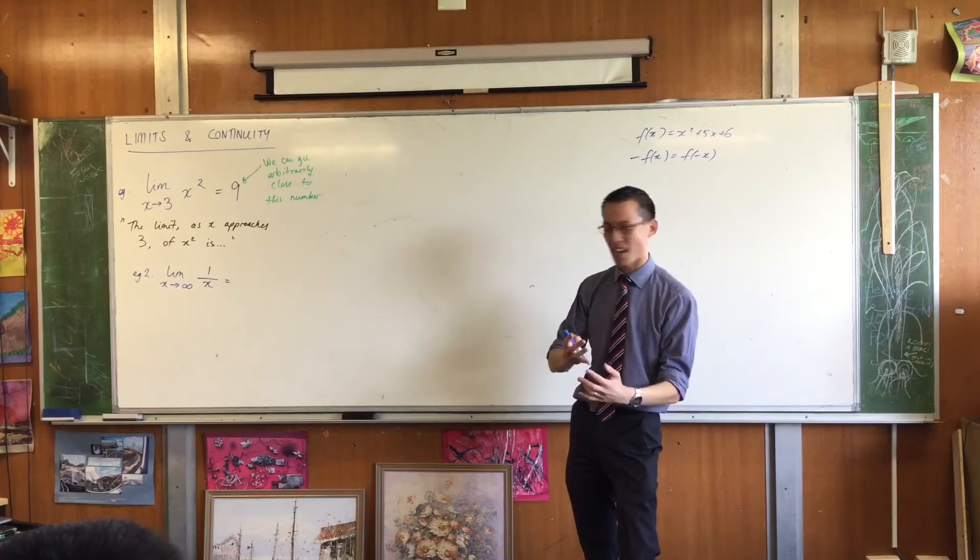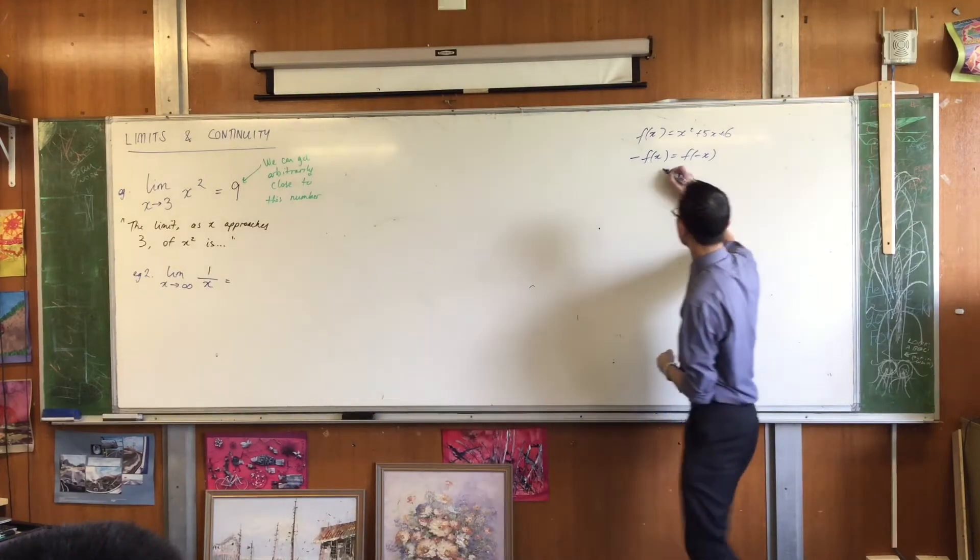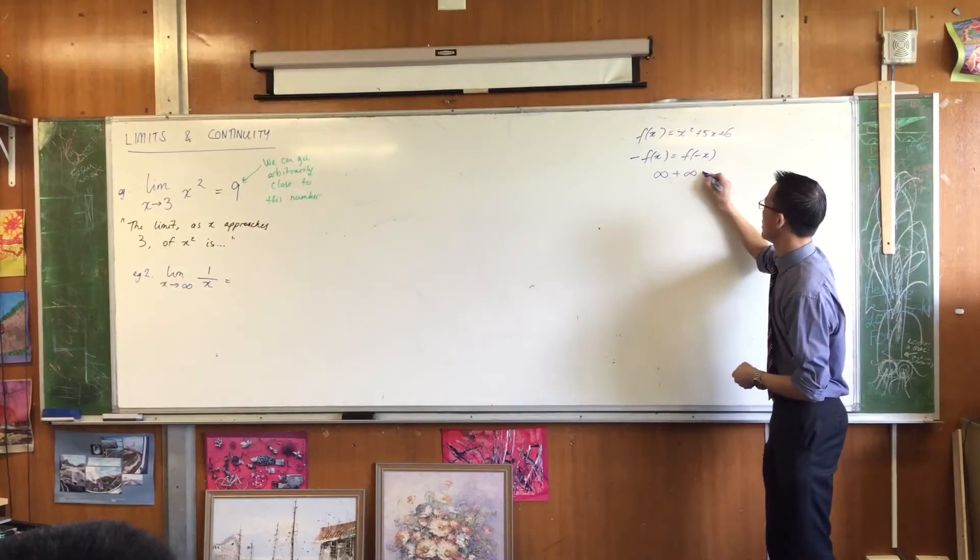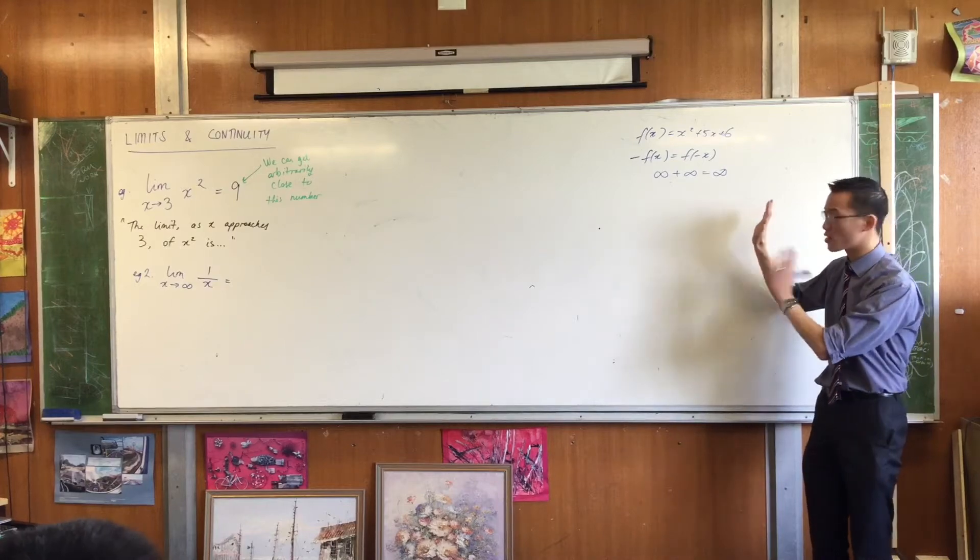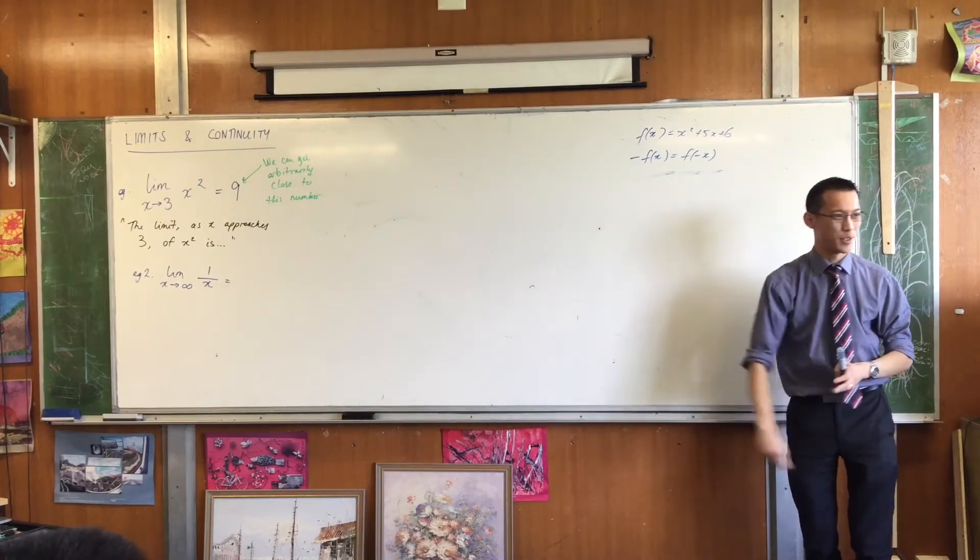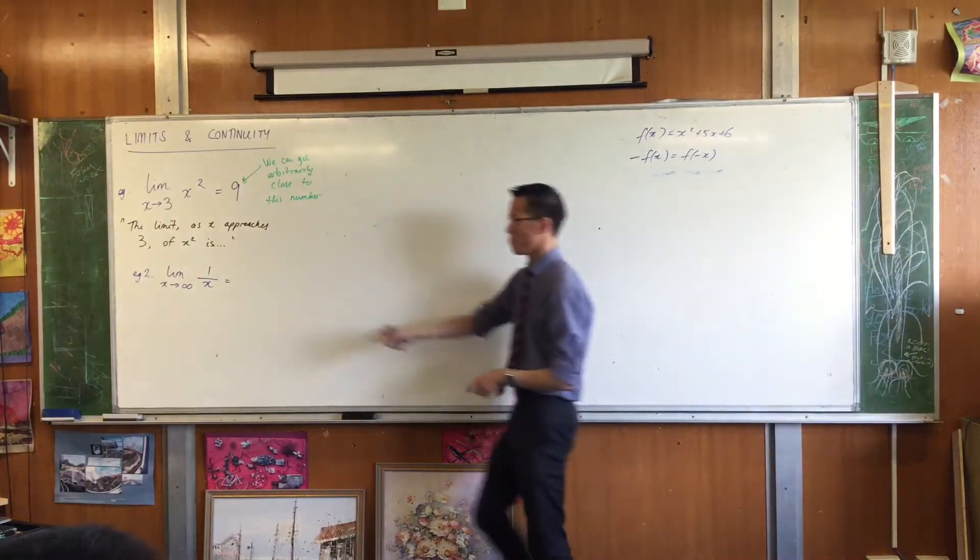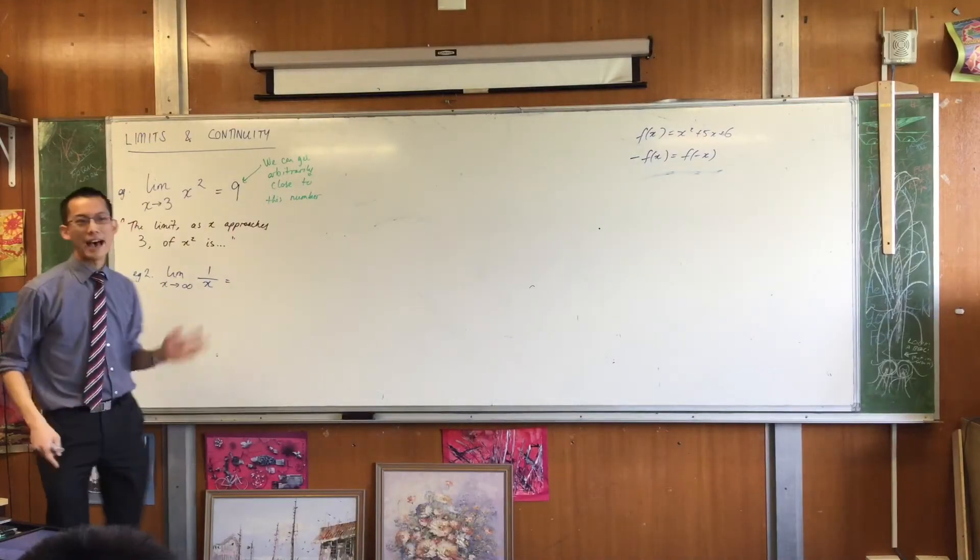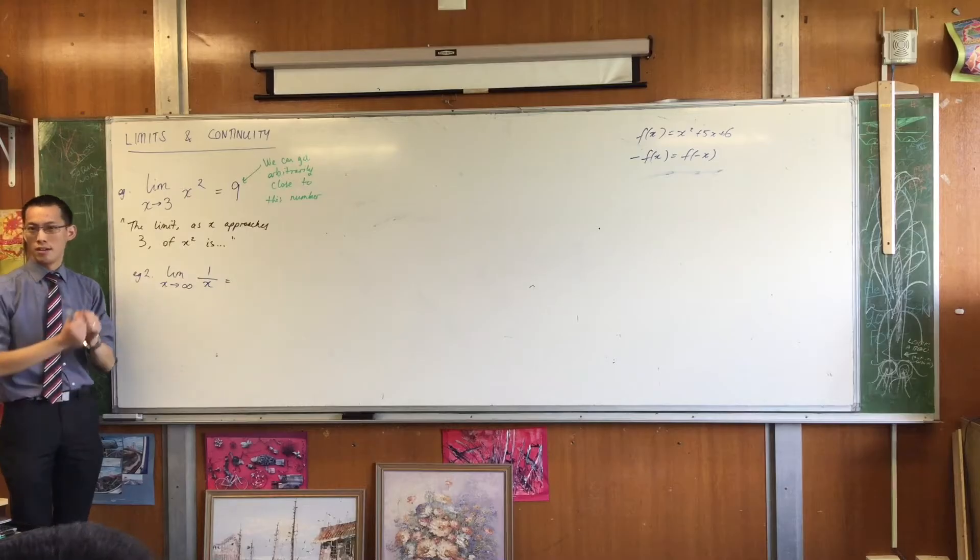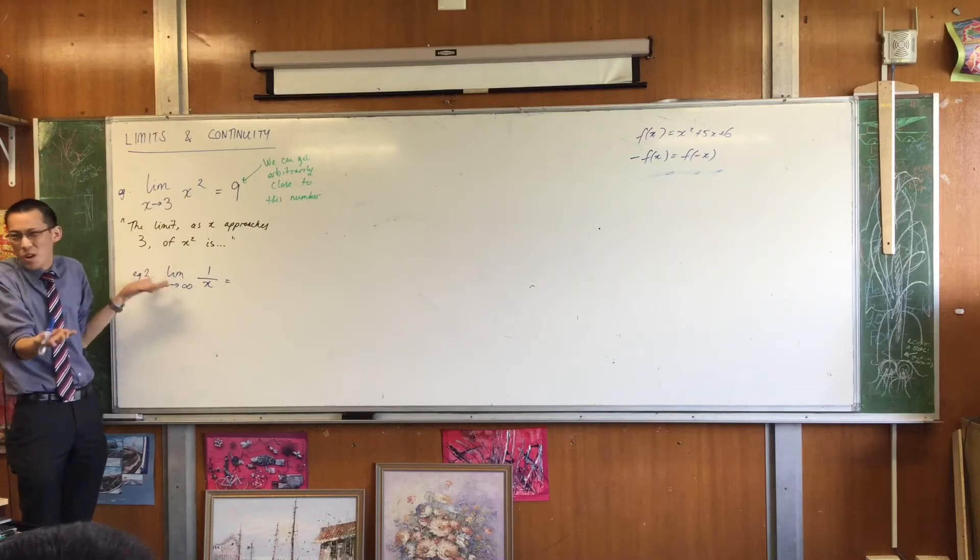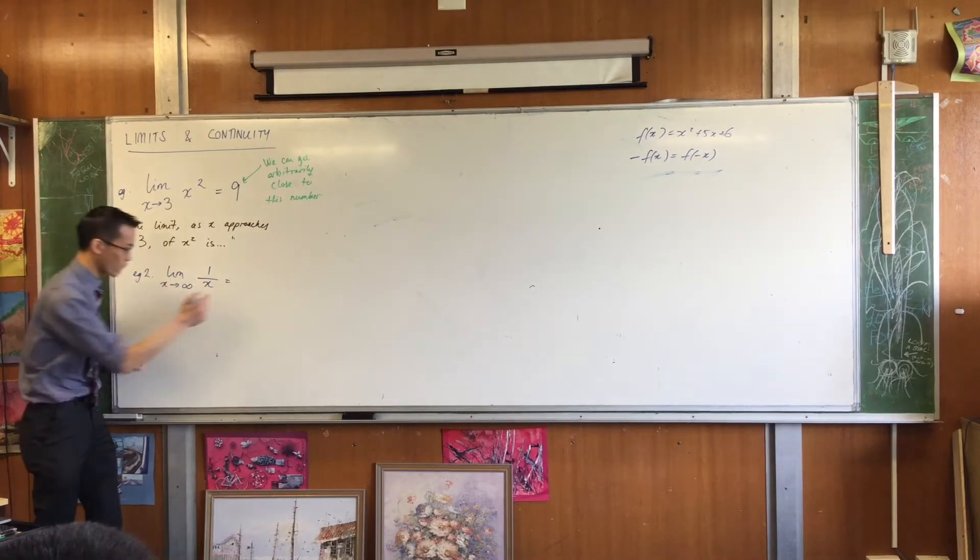It behaves a little bit like a number, but in other ways, it does not, right? So you're like, what do I do with this thing? The arithmetic of infinities is a tricky thing that is not within the scope of this course, but we can still understand the idea as x gets enormous. This becomes 1 over an enormous number. What's 1 over an enormous number?